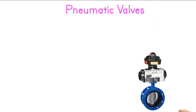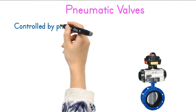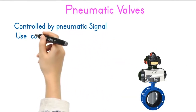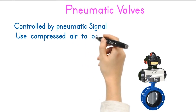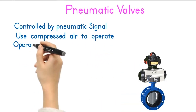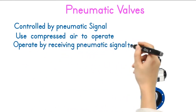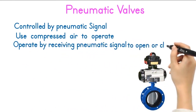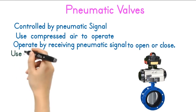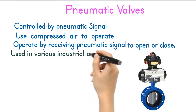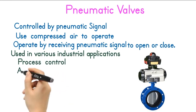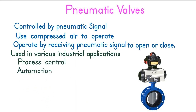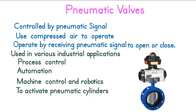Pneumatic valves. A pneumatic valve is controlled by a pneumatic signal and uses compressed air to operate. They operate by receiving pneumatic signals to open or close, and are used in various industrial applications including process control, automation, machine control, and robotics to activate pneumatic cylinders and manage pressure levels.